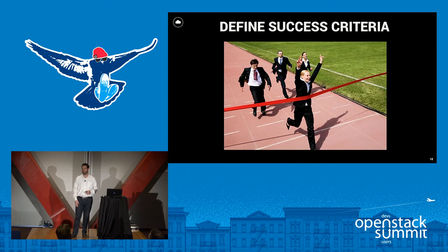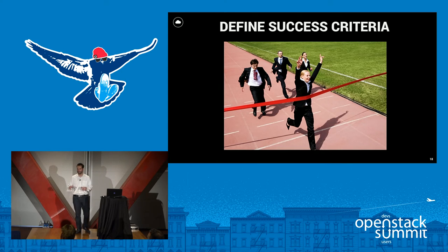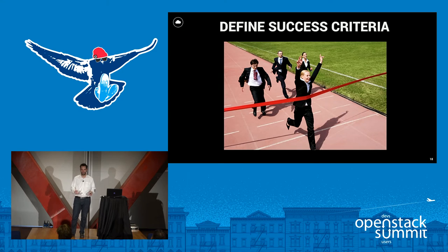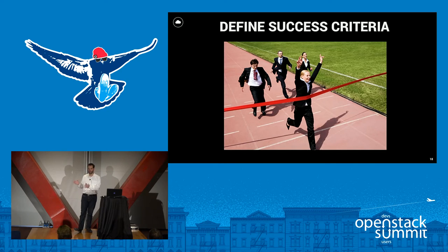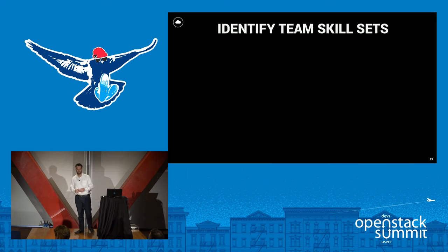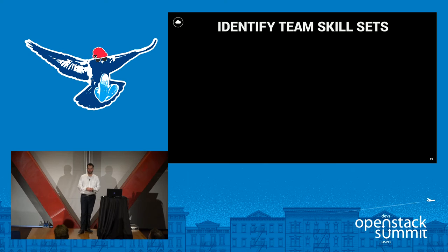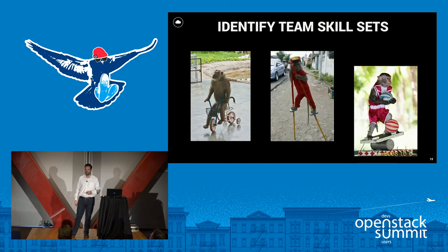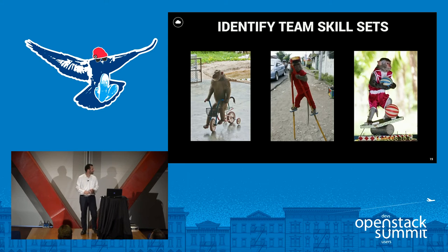Success criteria — super important. Going back to the business drivers around ROI and TCO, if you haven't clearly stated the metrics by which you're going to judge success, you're not going to get anywhere. Think about metrics relevant to your business. For example, in healthcare, if you can measurably decrease the time it takes to retrieve files and deliver patient data to doctors, set those metrics out in advance — if we achieve this, we've been successful. And before you start putting a proposal to the business, figure out what your team skill sets actually are.